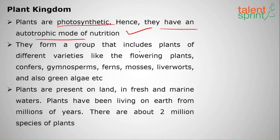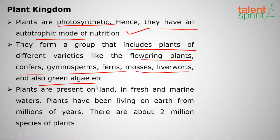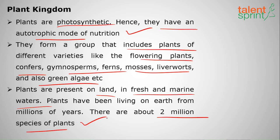Plants form a group including flowering plants, conifers, gymnosperms, ferns, mosses, liverworts, and green algae. Plants are present on land, in freshwater, and marine waters, even in salt waters. For example, mangroves like those in the Sundarbans grow in salt water. There are approximately two million species of plants in the world.